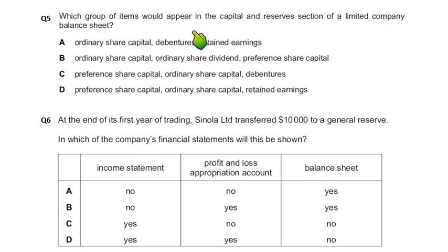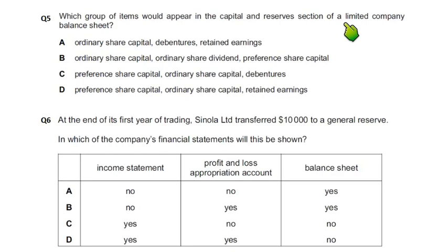A limited company balance sheet is normally the same as the sole trader because the asset side and liability side are the same. The only difference is the capital section. For a sole trader, capital is opening capital plus profit for the year. For a partnership, capital is the capital account and current account.